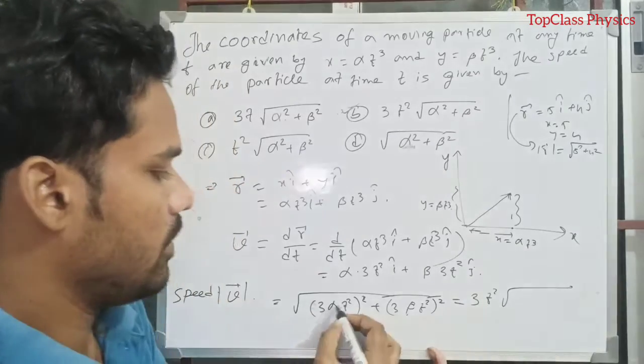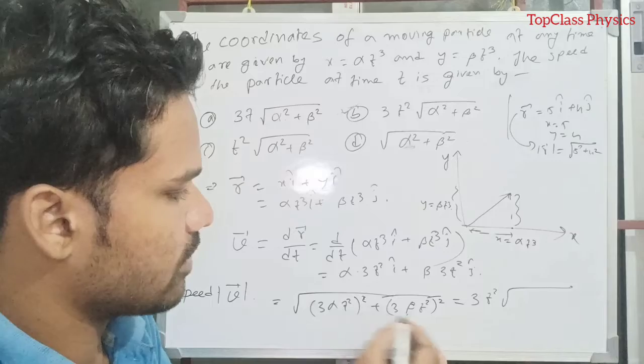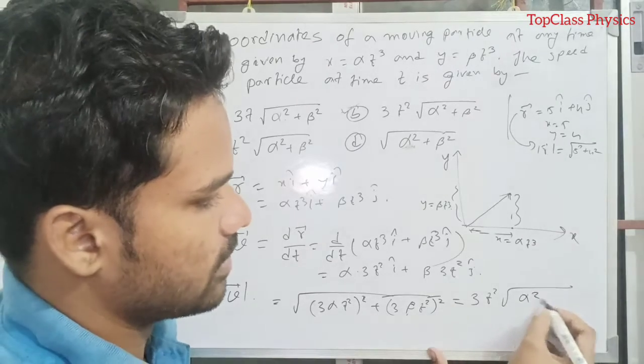Remaining part is only alpha square plus beta square. So our B option is the right answer.